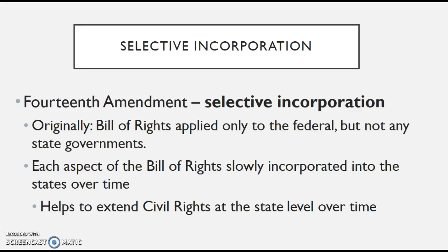Each aspect of the Bill of Rights has to be slowly incorporated into the states over time, which is important because it helps extend civil rights at the state level. What selective incorporation means is that each aspect of the Bill of Rights — the First Ten Amendments — is going to slowly over time be incorporated into the state governments, meaning that states now have to abide by the Bill of Rights. One reason is that it was assumed at the time of drafting that states would already have something similar to freedom of speech, but not every state actually did.